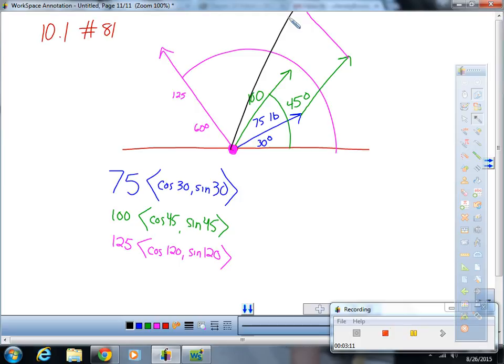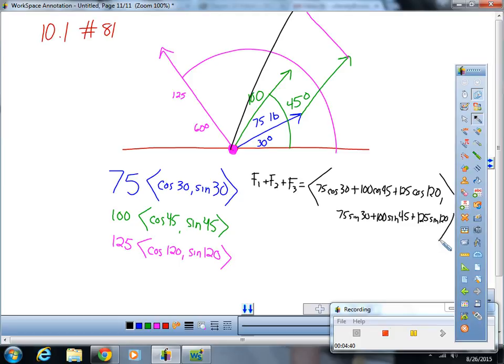Okay, so we're just going to add the components. So, the long ugly form would be force one plus force two plus force three is going to result in a vector. That's going to be 75 times the cosine of 30 plus 100 cosine 45 plus 125 cosine of 120 comma...